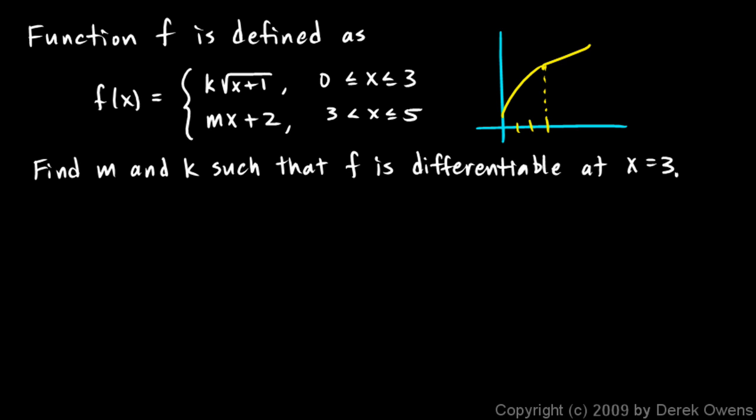Now we have to find these values, k and m, such that this function here is differentiable at this point, x equals 3, right there.